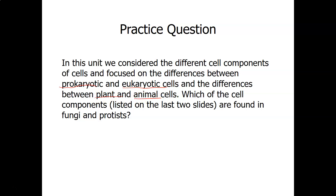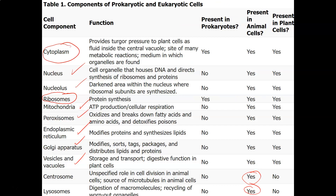Which cell components are found in fungi and protist? It's important to know that fungi and protist are eukaryotic. Going back to the table, fungi and protist both have cytoplasm, nucleus, nucleolus, ribosomes, mitochondria, peroxisomes, endoplasmic reticulum, Golgi, vesicles, and vacuoles.